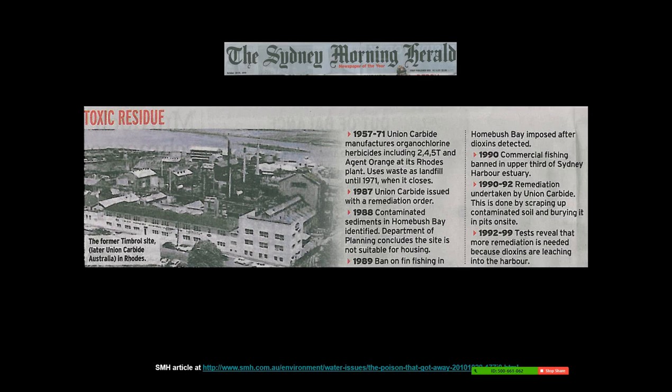Looking into it, the story gave the history of the toxic residue. In the 1950s a company called Union Carbide — which became infamous in the 1980s for the Bhopal gas disaster in India, where thousands of people were killed after a release at nighttime — had a factory in the upper reaches of Sydney, and had been producing a range of chemicals including dioxins that contaminated Sydney Harbour.